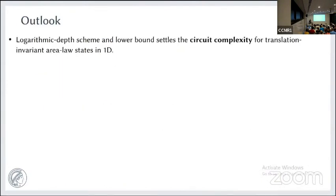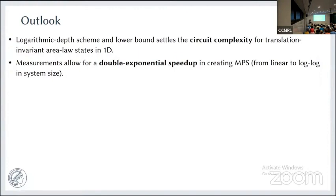Let me summarize. Logarithmic depth suffices for short-range entangled states, and this is both a lower and upper bound, resolving the circuit complexity for this class. For long-range entangled states, the optimal complexity is linear. Adding quantum measurements and subsequent feed-forward leads to a strong speedup: you go from linear depth — necessary for GHZ states — to doubly logarithmic depth for all MPS, which is a doubly exponential improvement.